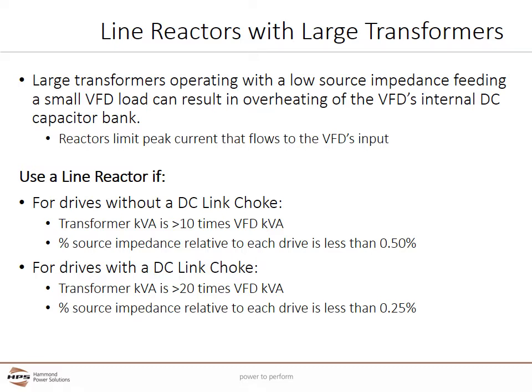If the VFD does have a DC link choke and the transformer feeding the VFD is 20 times larger than the VFD, you may want to consider a line reactor on the front end. The smallest distribution transformer is generally 15 KVA. Ten percent of 15 KVA is 1.5 KVA, which is roughly 2 horsepower. Since many VFDs below 10 horsepower don't have a DC link choke, VFDs 2 horsepower and below should at minimum have a line reactor. Since the most common distribution transformer is 75 KVA, just about any drive 10 KVA or smaller probably needs a line reactor considered.